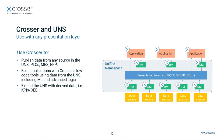You can also use Crosser to build applications that use the data — things like calculating derived insights like OEE or other types of KPIs, or building optimization applications where you use data from the UNS and feed it through a machine learning model to derive optimized settings that you want to feed back into your systems.